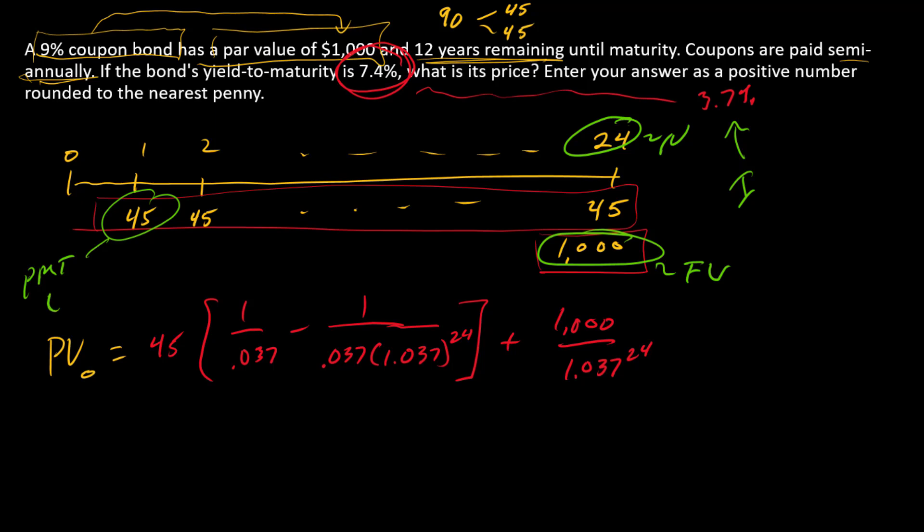We want to enter the payment and the FV as having the same sign. If you're holding the bond, both of those are inflows to you. And so the PV, or the price, is going to come out with a negative.